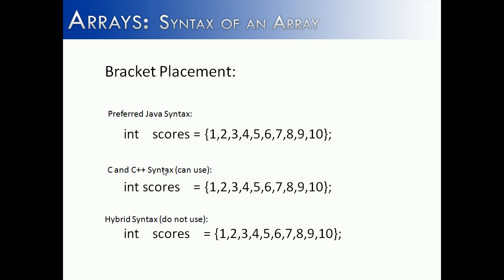When creating arrays, you can place brackets in different places. The preferred Java syntax, and what I'm going to be using for these videos, is to put the bracket after the data type. Some people have moved in from C and C++, where it was placed after the variable name instead. Someone combined the two to try to make everyone happy — but of course, that usually makes everyone unhappy. I would suggest using the preferred Java syntax of putting it after the data type, but it will work to put it after the variable name.